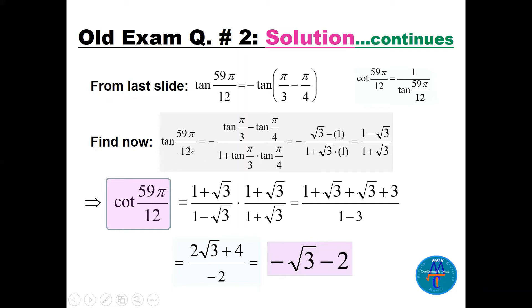That was tan(59π/12). For cotangent, we take the reciprocal: (1 + √3)/(1 − √3). Multiplying by the conjugate (1 + √3)/(1 + √3) gives (1 + √3)² in the numerator and 1 − 3 = −2 in the denominator. Expanding: 1 + 2√3 + 3 = 4 + 2√3, divided by −2 gives the final answer: −√3 − 2.